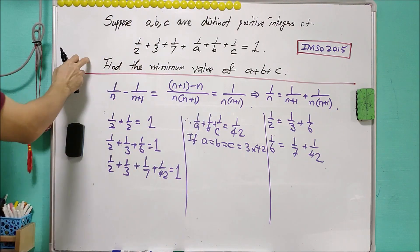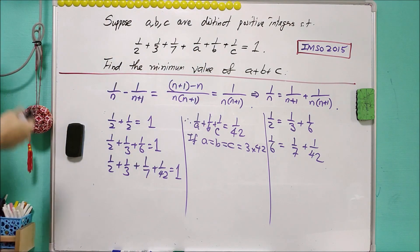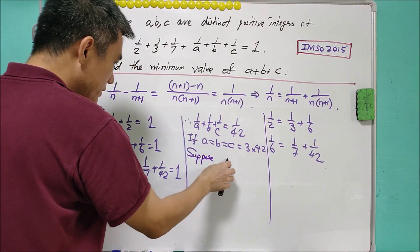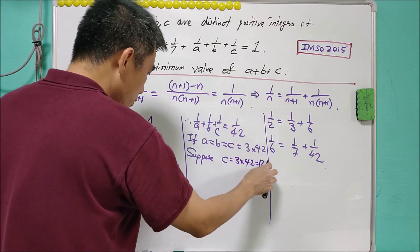For this question, we are asked to find the minimum value of A plus B plus C. We can try our best to get something that close to the minimum. We suppose C equals to 3 times 42, that is equals to 126.